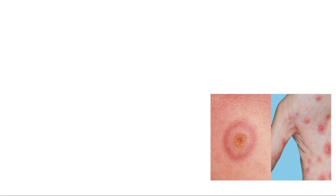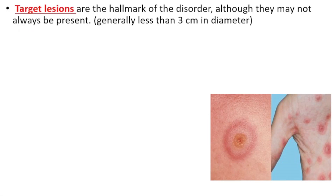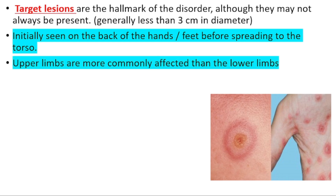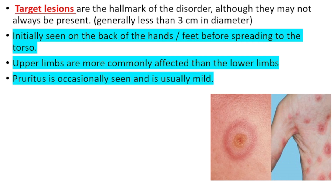Target lesions are the hallmark of this disorder, although they may not always be present. They are generally less than three centimeters in diameter and are initially seen on the back of the hands and feet. They can then spread to the torso, generally affecting the upper limbs more. Pruritus may be present but is generally mild.